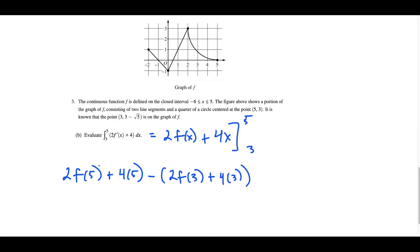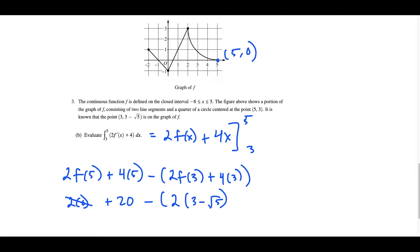From the graph, f of 5 equals zero because the y-value there is zero, so 2 times zero cancels out. We have plus 20. Now f of 3 — we're told the y-value when x equals 3 is three minus the square root of 5, so we replace f of 3 with three minus square root of 5. If they hadn't given us that, we'd have to write the equation of the circle: x minus 5 squared plus y minus 3 squared equals 9, plug in x equals 3, and solve for y. But they were polite here. Then we have plus 12 at the end.